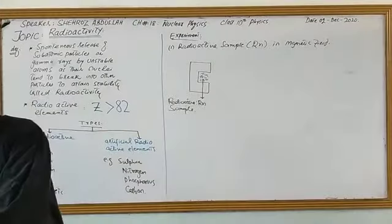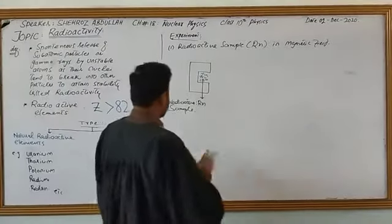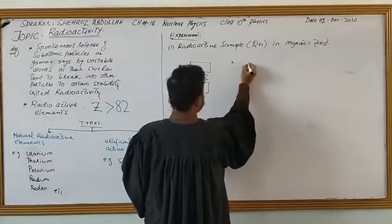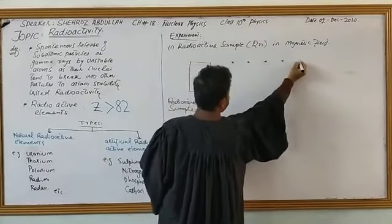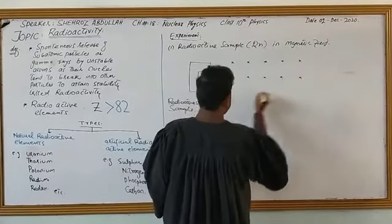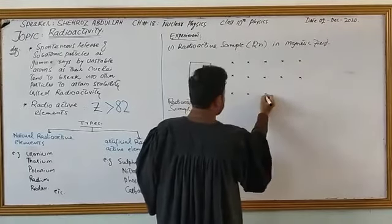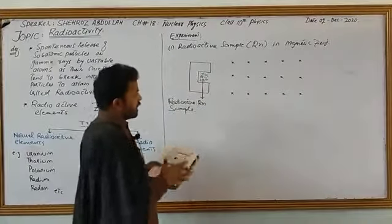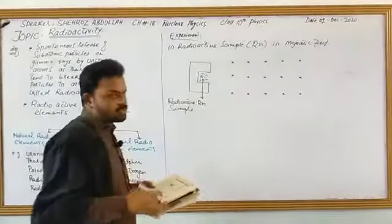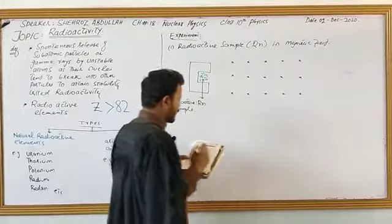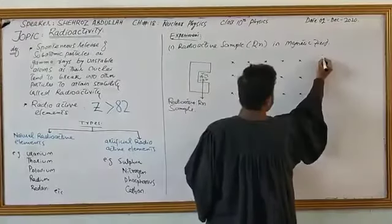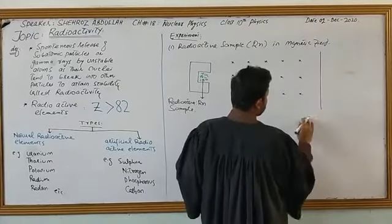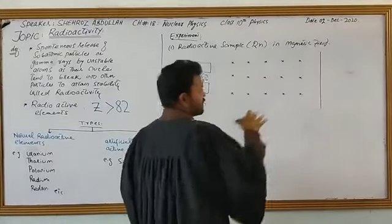The magnetic field is directed into the page. On the opposite side we have a screen — a fluorescent screen or photographic plate — which can detect the emitted particles.